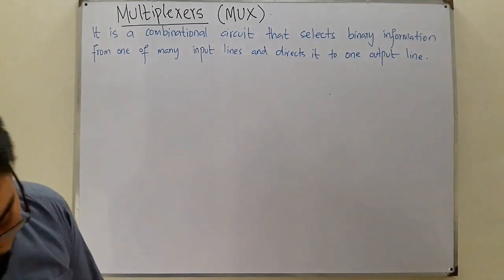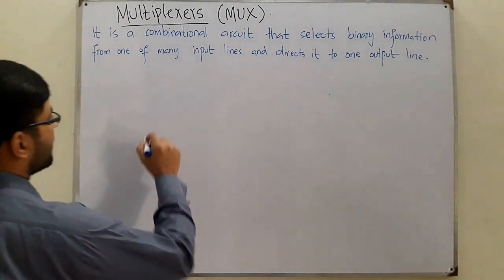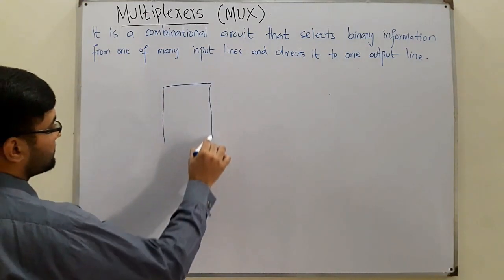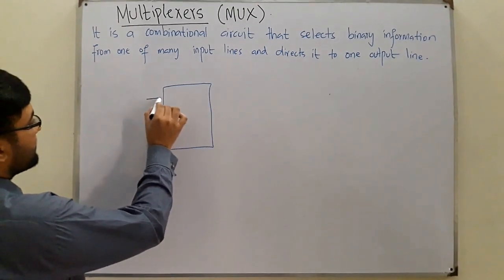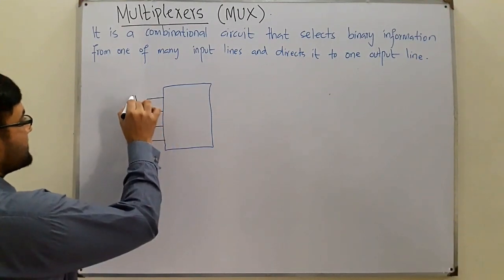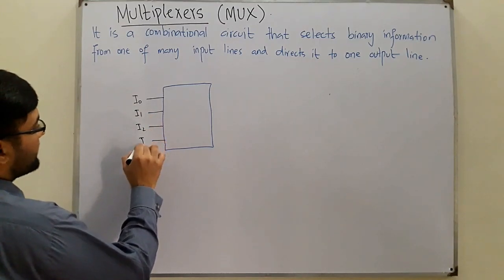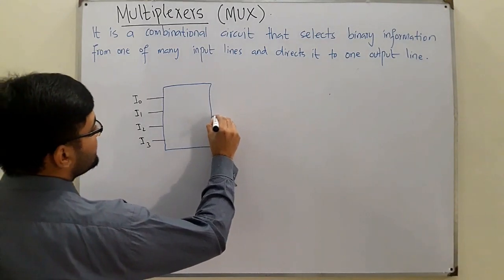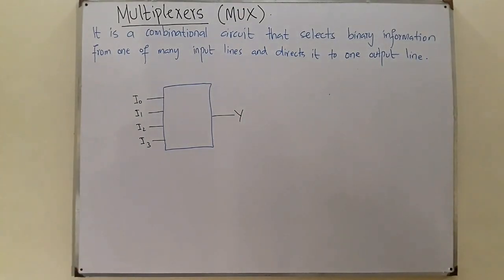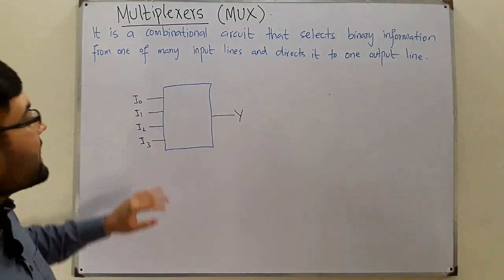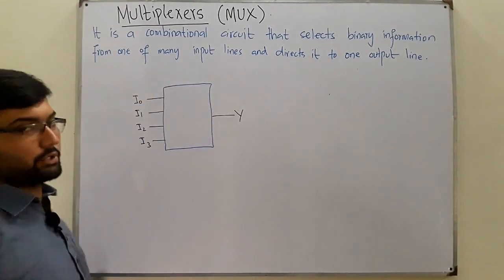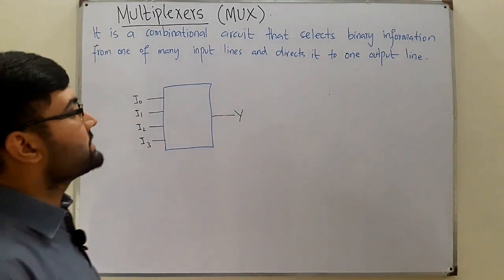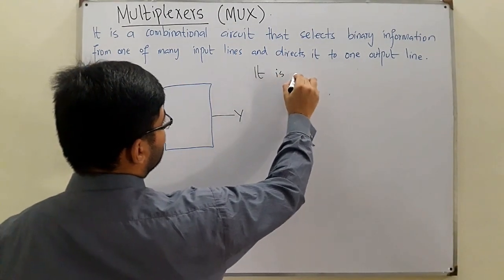This can be represented by a block. We have a number of inputs — let's say four: I₀, I₁, I₂, and I₃ — and only a single output Y. So the multiplexer takes multiple inputs and directs one of them to the single output line.